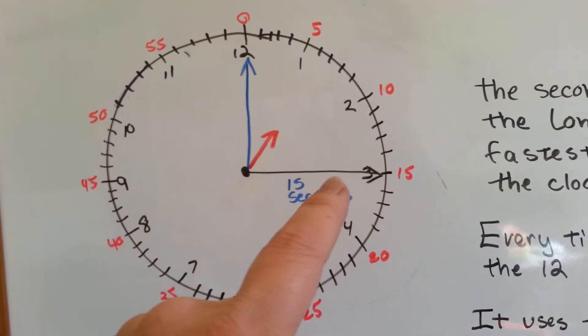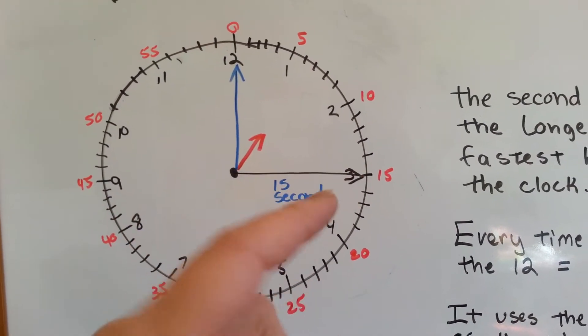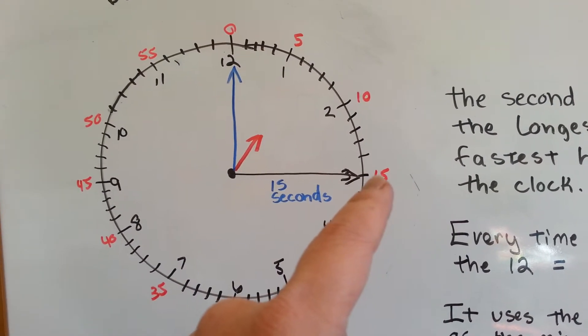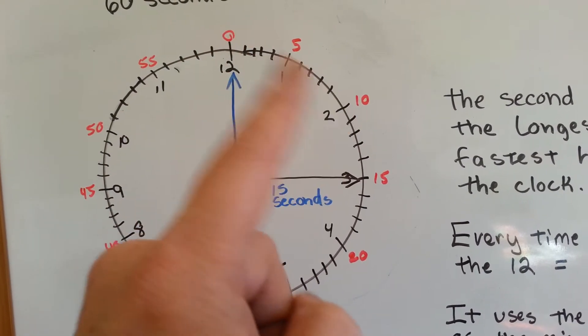Here's the hour hand, the minute hand, and here's the second hand, the longest one. If the second hand is pointed at the three, it's fifteen seconds. If it was pointed at the two, it would have been ten seconds. See?